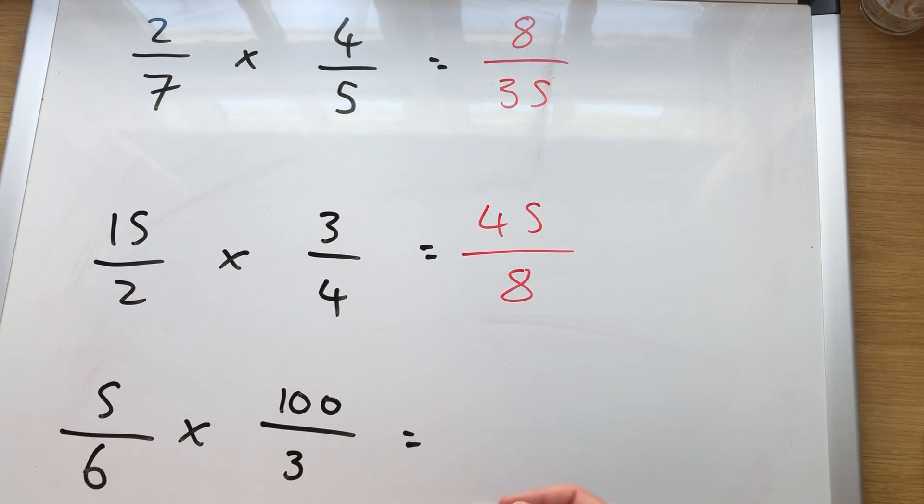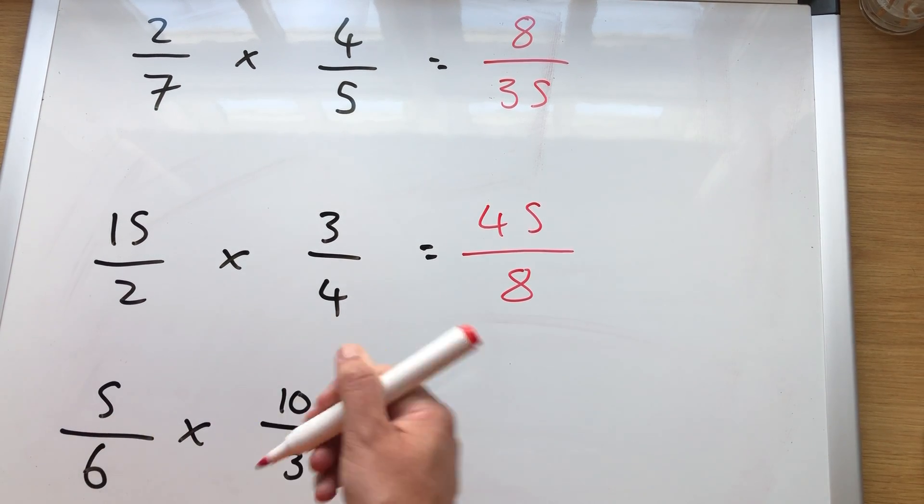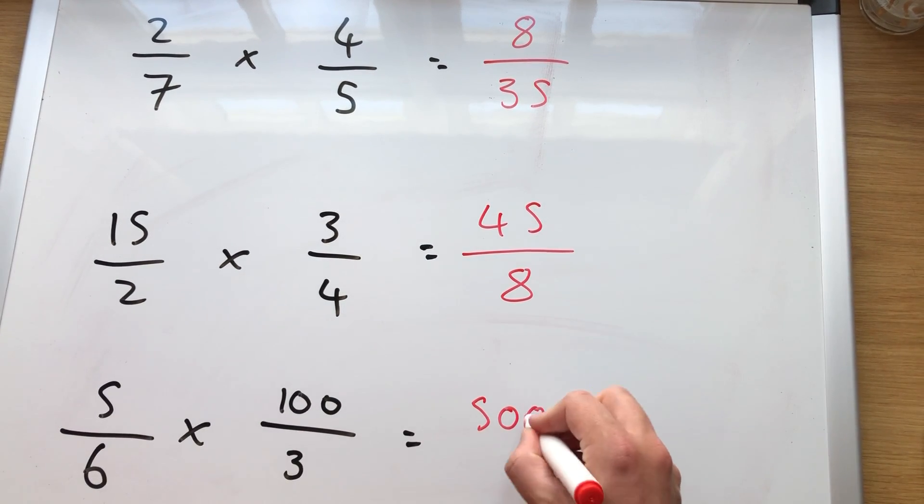Multiply the top, multiply the bottom. Five times a hundred, five hundred. Multiply the bottom, six times three, eighteen.